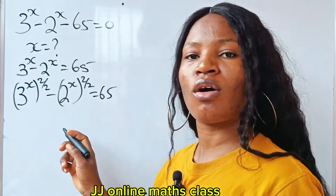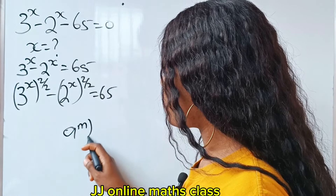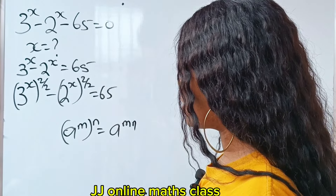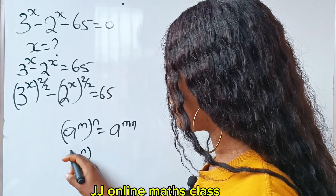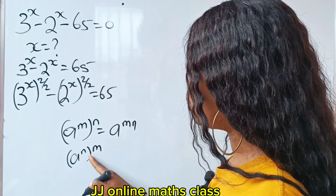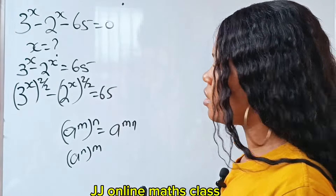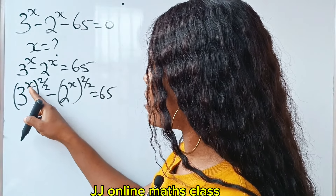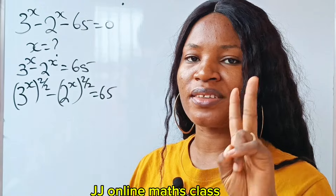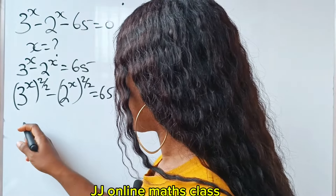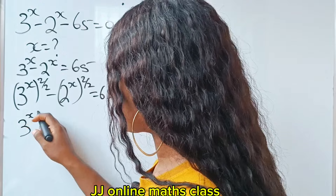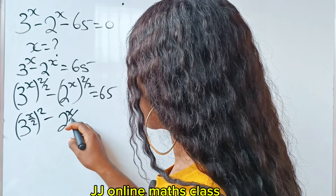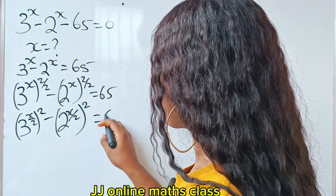Recall the law of indices: a to the power of m multiplied by a to the power of n is equal to a to the power of m times n. That means I can bring the 2 inside and take x outside. So I can now write 3 to the power of x over 2 raised to the power of 2, minus 2 to the power of x over 2 raised to the power of 2, is equal to 65.